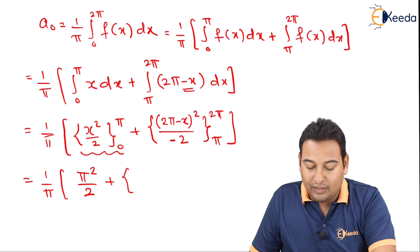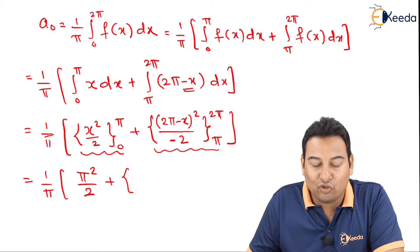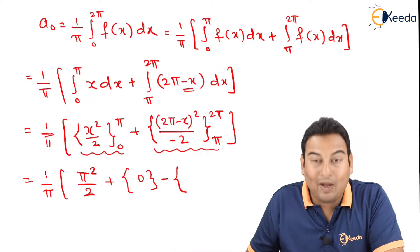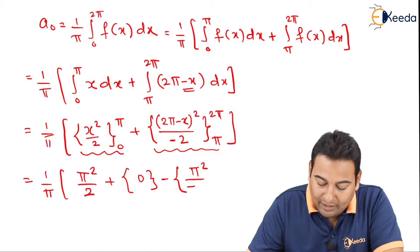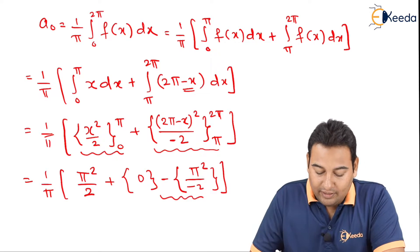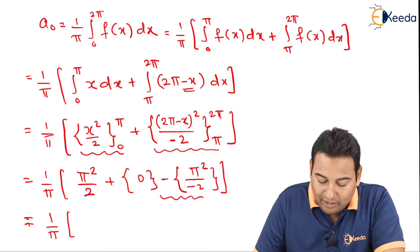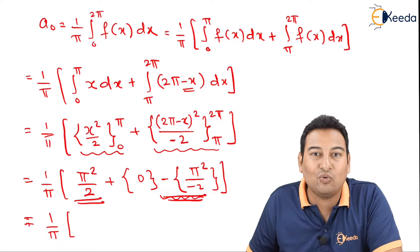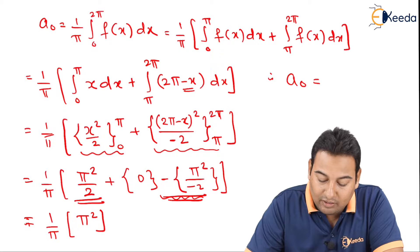For the second part, substituting upper limit 2π: (2π - 2π) = 0, so that term is 0. Substituting lower limit π: (2π - π) = π, giving π²/(-2), which is -π²/2. Therefore we get (1/π)[π²/2 + π²/2] = (1/π)·π² = π. So a₀ = π.